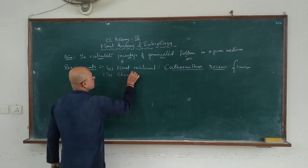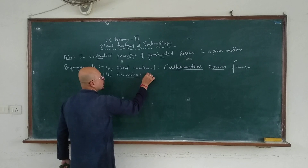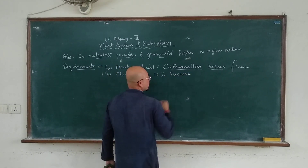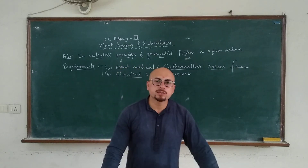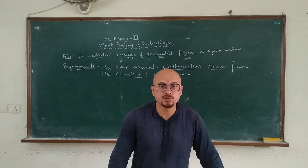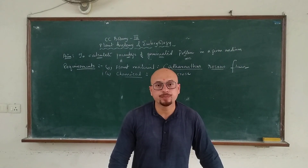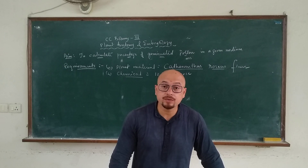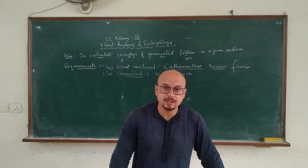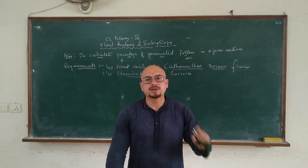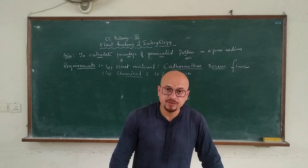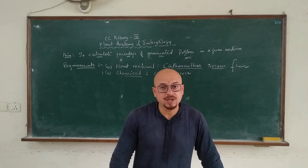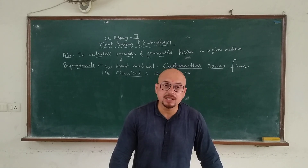In terms of chemicals, we will use 10% sucrose, because sucrose gives the best result — it acts as a source of energy so that the pollen germinates. And why 10%? Why not 15%, 20%, or 5%? Because this particular percentage is standardized. 10% sucrose is considered to be optimum, and under this concentration, the maximum number of species are seen to germinate.